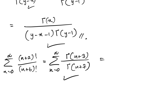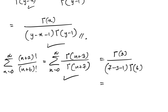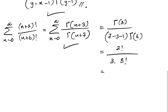So this is the answer. Instead of x we have 3, and instead of y we have 7. So we have gamma(3) over (y-x-1) times gamma(y-1), which is gamma(3) over (7-3-1) times gamma(6). That gives us 2! over 3 times 5!, which simplifies to 2! cancelled, giving 1 over 3 times 5 times 4 times 3, which equals 1 over 180. This is the answer for this series.